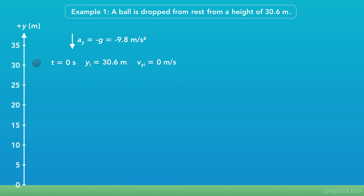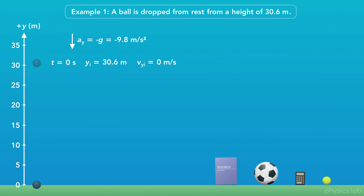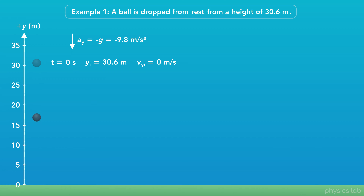Now, to get a better idea of how this motion works, let's explore one-dimensional projectile motion using this scenario. A ball is dropped from rest with no initial velocity from a height of 30.6 meters. Since we're ignoring air resistance, all objects accelerate downwards at the same rate, so they all follow the same motion. The y-position starts at 30.6 meters and decreases as the ball falls, while the velocity starts at zero and increases as it falls.